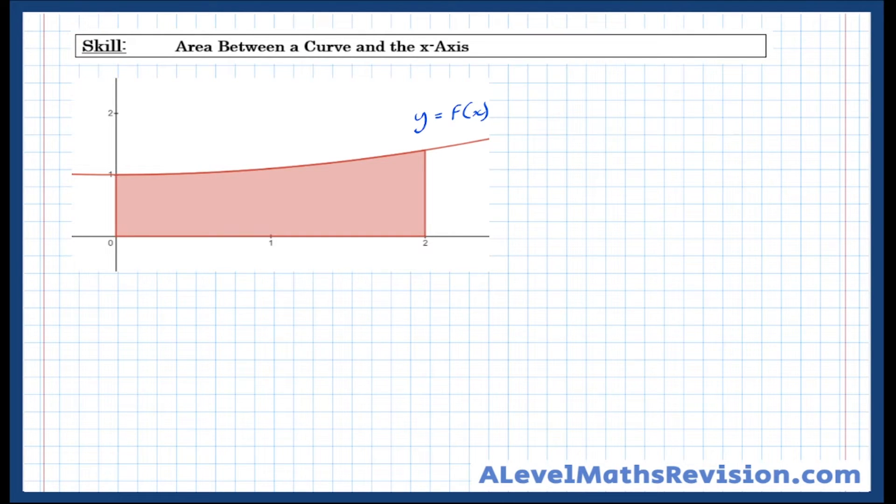And the way we write that in mathematical notation is the integral between two limits, let's call them b and a, of any function f of x dx equals the limit as delta x approaches 0 of the sum between x equals a and b of f of x times delta x.